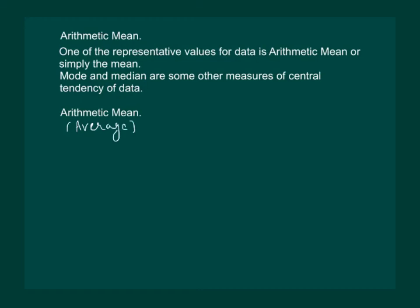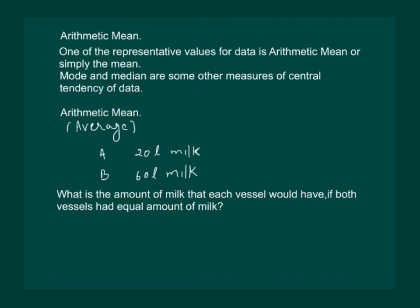Suppose we have two vessels, A and B. In one vessel we have 20 liters of milk, and in the other vessel we have 60 liters of milk. Now suppose we are asked: what is the amount of milk that each vessel would have if both vessels had equal amounts of milk?